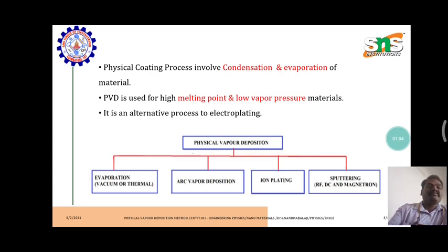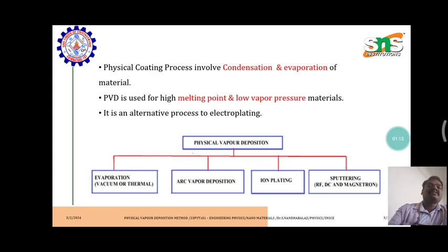Physical vapor deposition alternative sources include evaporation material, arc vapor deposition, ion plating method, and sputtering methods such as RF, DC, and magnetron sputtering.